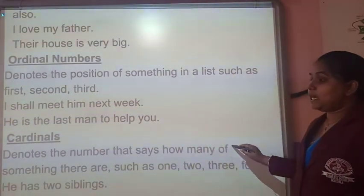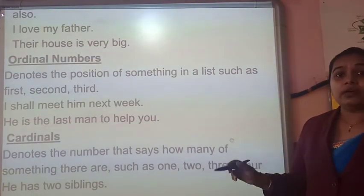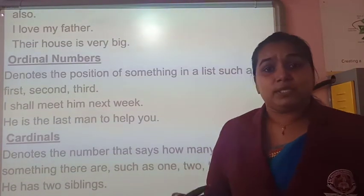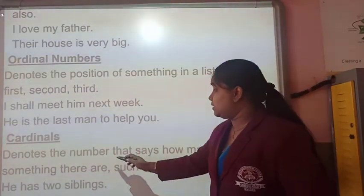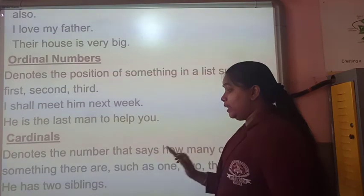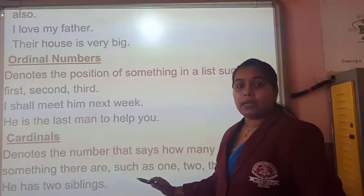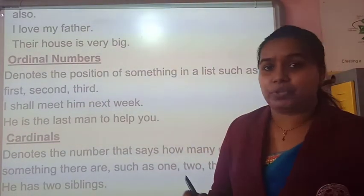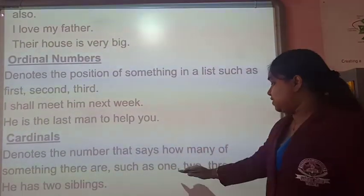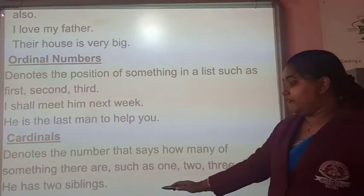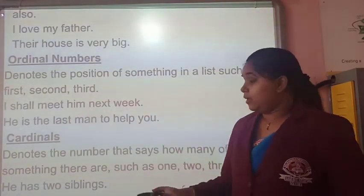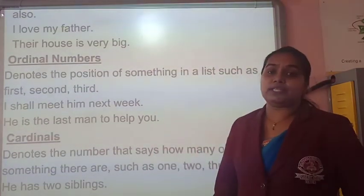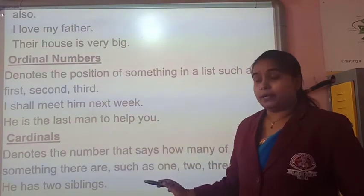The next one is cardinals. Cardinals are numbers denoting quantity — how many. For example: 'I have two sisters.' In cardinal numbers we are pointing out nouns which we can count — countable nouns — such as 1, 2, 3, 4. 'My father has 4 cars.' Here 2 and 4 are cardinal determiners.